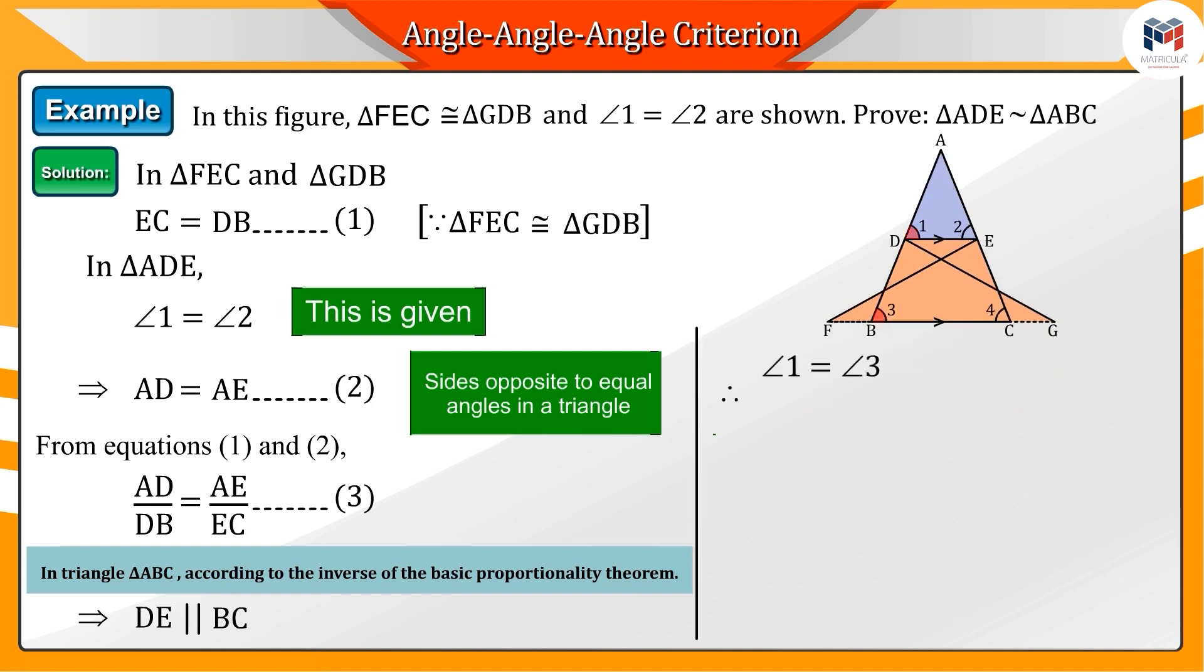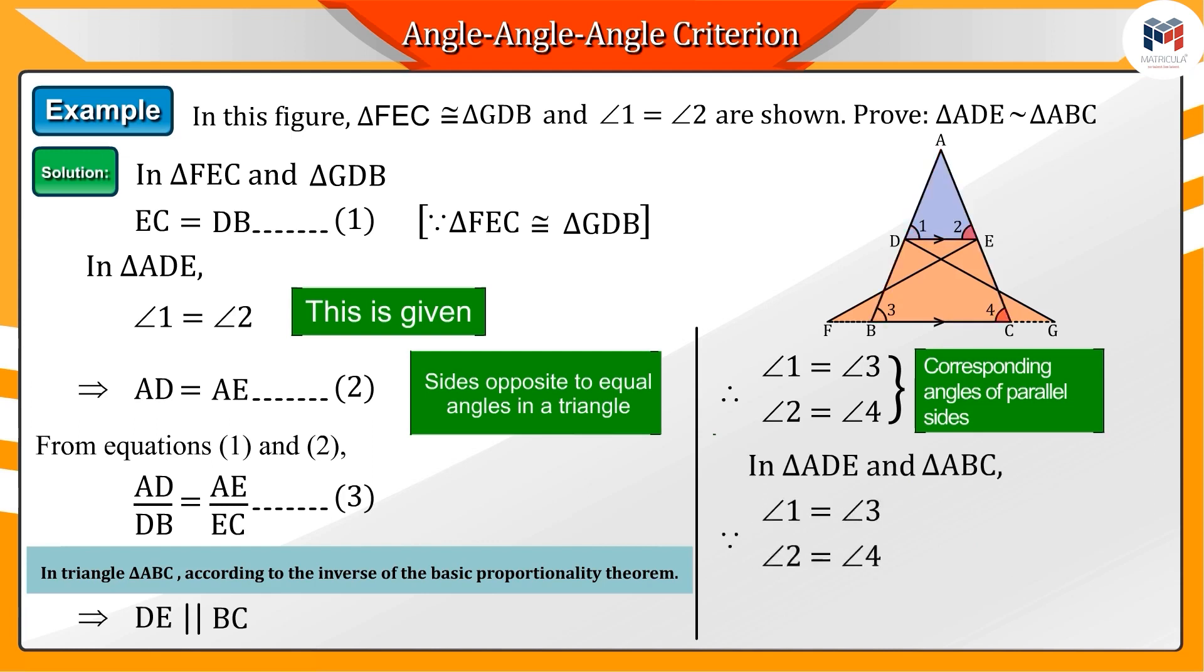Because of which angle 1 is equal to angle 3 and angle 2 is equal to angle 4. Can you tell why? As we know that the angles corresponding to the parallel sides are equal, because of which in triangles ADE and ABC, angles 1 and angle 3 and angles 2 and angle 4 are equal.